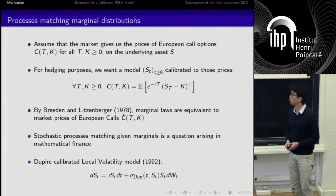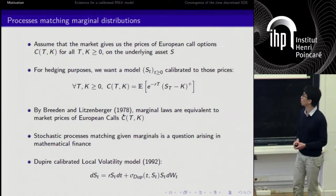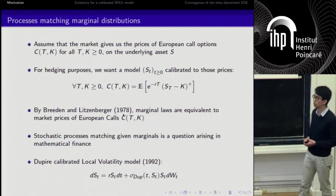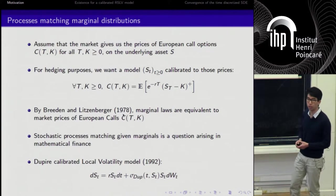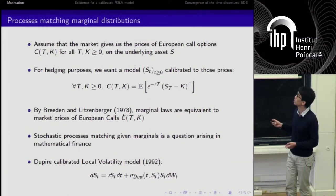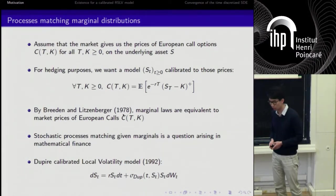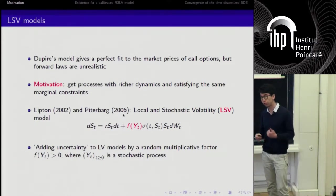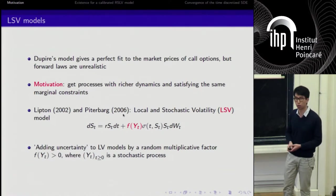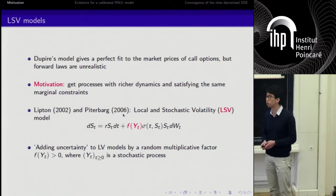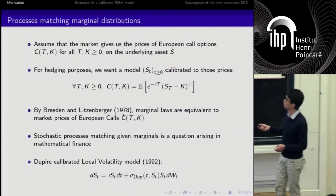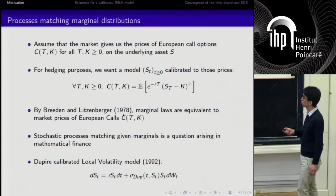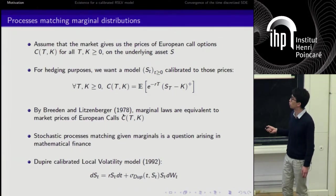A first answer has been given by Bruno Dupire in his well-known local volatility model. Here S_t is a Markov process with sigma Dupire, where sigma Dupire is a deterministic function of time and the level of the spot S. Sigma Dupire can be explicitly expressed as a function of the derivatives of C(T,K) with respect to the maturity T or the strike K. This is the first element of answer, but it's not satisfactory enough. What is good is that Dupire's model gives us a perfect fit to the market prices of call options. But actually, it was the only degree of freedom that we had. If we replace sigma Dupire by another deterministic function, R is given by the market. So once we have fixed sigma Dupire, we cannot change anything else in the model.